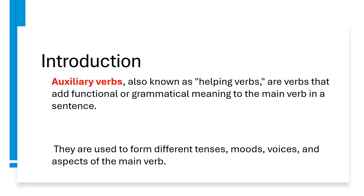They are used to form different tenses, moods, voices and aspects of the main verb. An auxiliary verb is defined as a verb such as be, do and have, used with main verbs to show tense and to form questions and negatives. It can also be defined as a verb used with another verb to form tenses, negatives and questions.